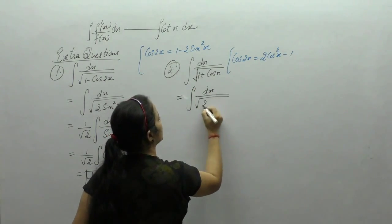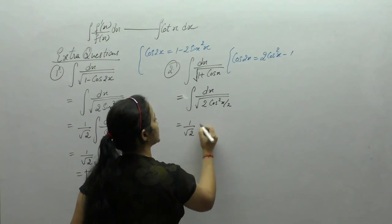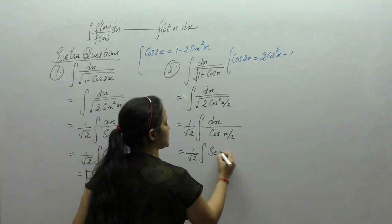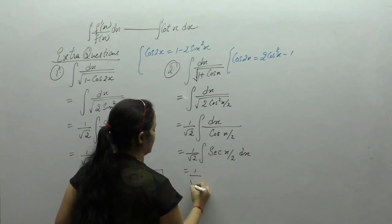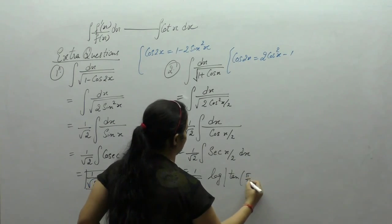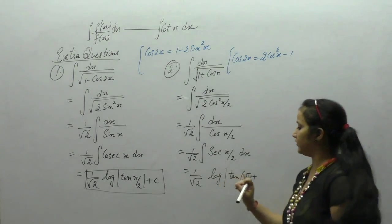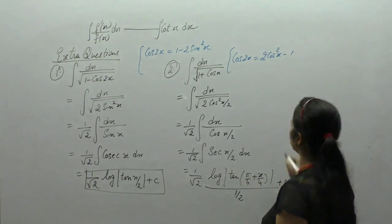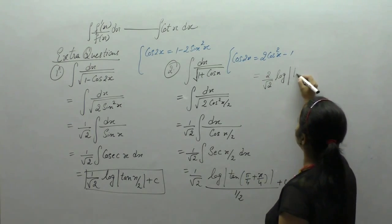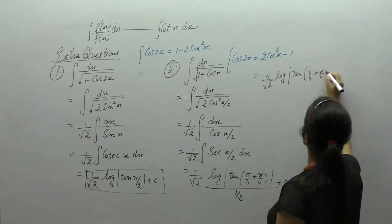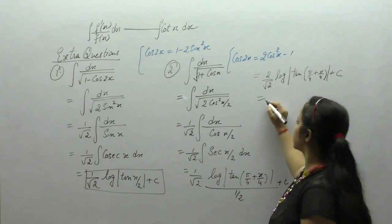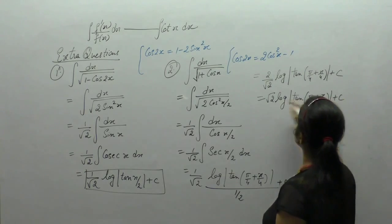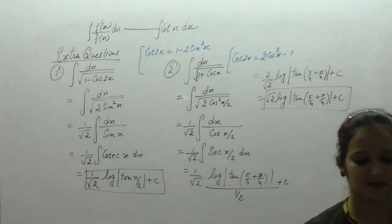The expression becomes dx upon square root of 2 cos²(x/2). The square root of 2 is constant and square and square root cancel, leaving cos(x/2). Now 1 upon cos is sec, so we have (1/√2) integral of sec(x/2) dx. The integral of sec x is log|tan(π/4 + x/2)|, and since the angle is already x/2, we divide again to get x/4. The final answer is √2 log|tan(π/4 + x/4)| + c.